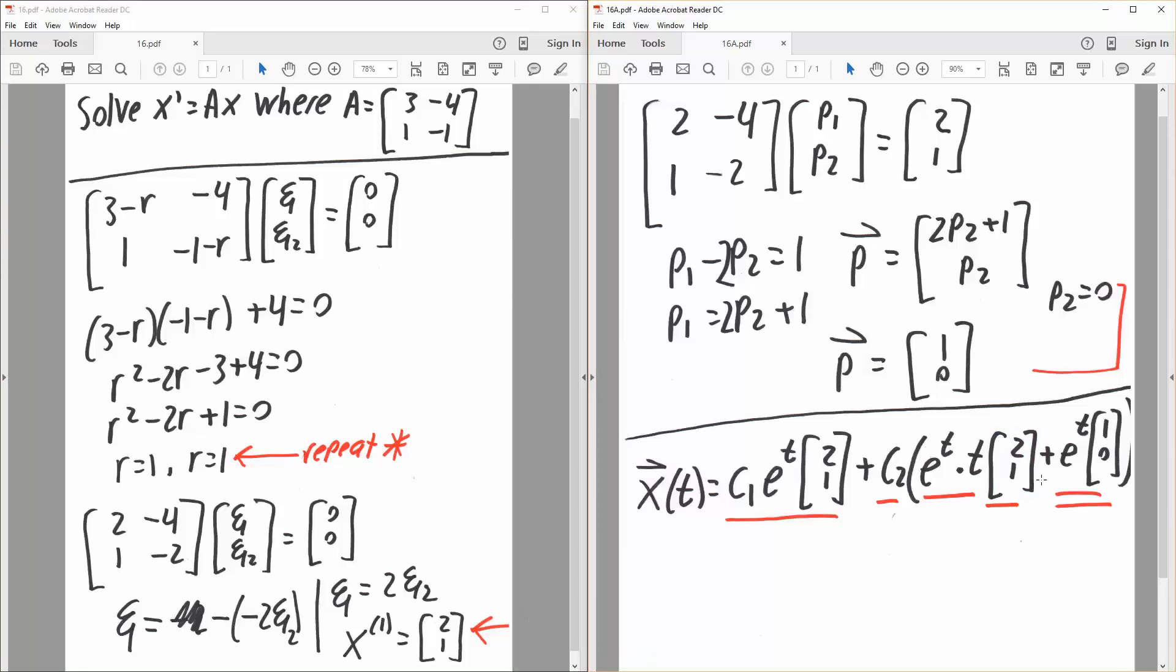now this is a little different, we say e raised to t of 1, 0, this right here. And so that's all you need to do for this problem.